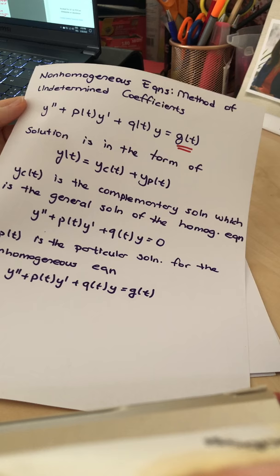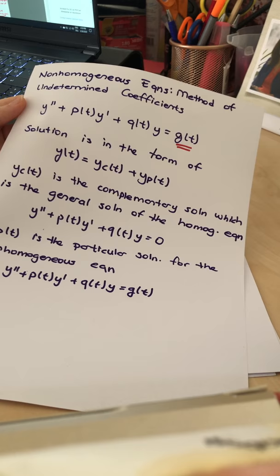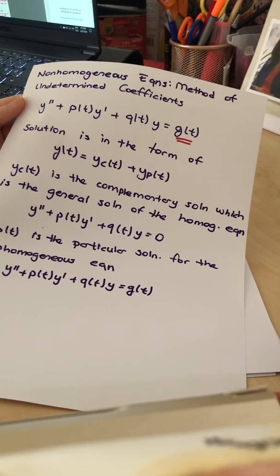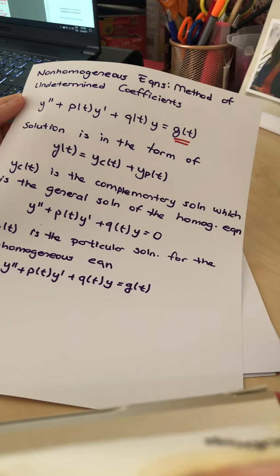We solve them by writing the characteristic equation and finding its roots. If the roots are real and repeated, we have a way of writing the solution. If the roots are complex, we have a different way.